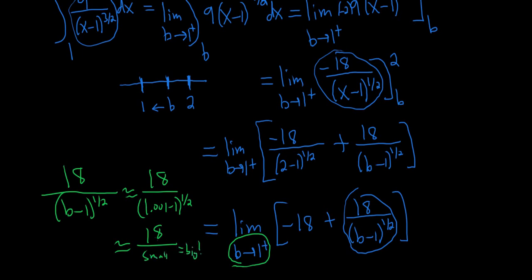That's big. So you have 18 over a small number it's big. Think of like 18 over 0.0001. That's huge. That's what's happening here. As b approaches 1 from the right this gets really big. I mean negative 18 becomes negligible. So you just get infinity.